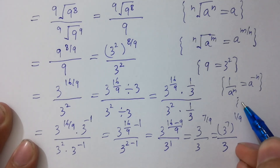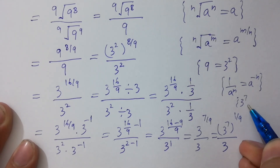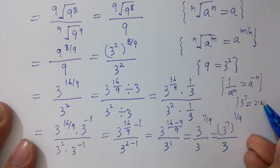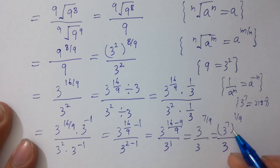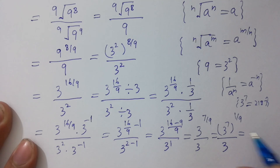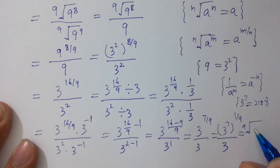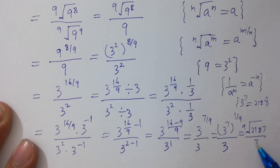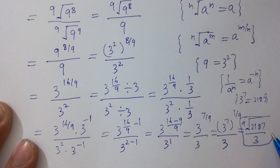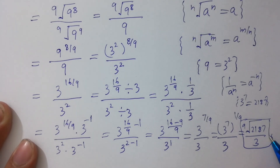Since 3 to the power 7 equals 2187, so the expression equals 9 root 2187 over 3, which is our final answer.